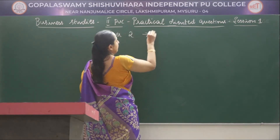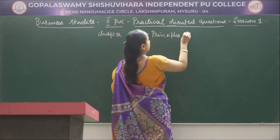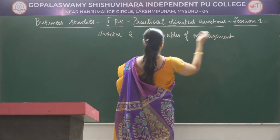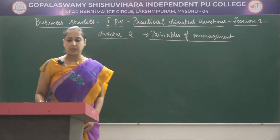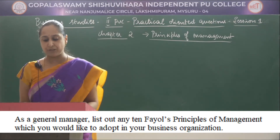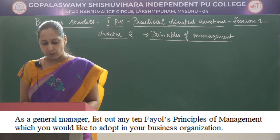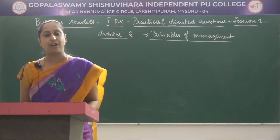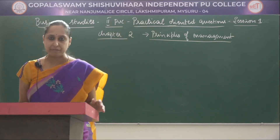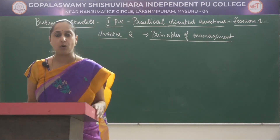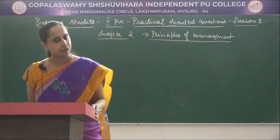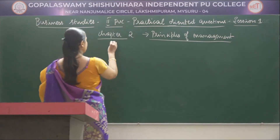Next, the practical oriented question is from Chapter 2, that is Principles of Management. As a general manager, list out any 10 Henry Fayol's principles of management which you would like to adopt in your business organization. In this question, you have to list any 10 Fayol's principles. This practically oriented question is for 5 marks. You have to list any 10 Fayol's principles out of 14 principles — no need to write any explanation.